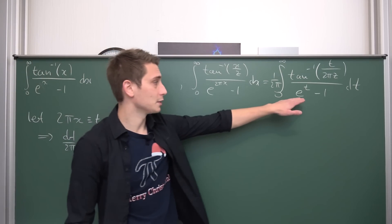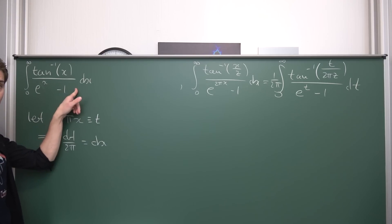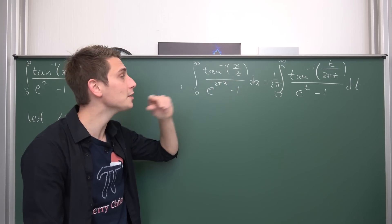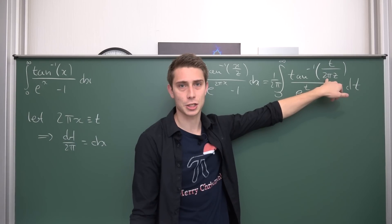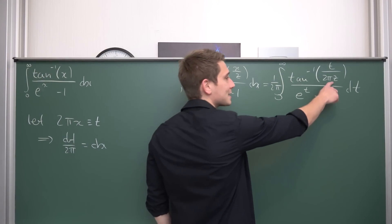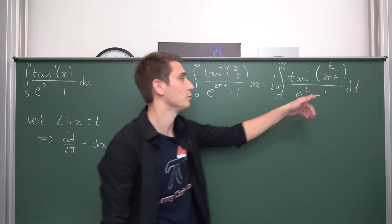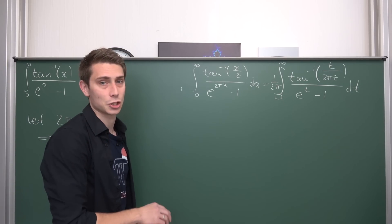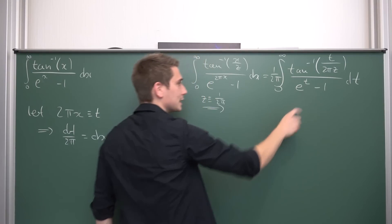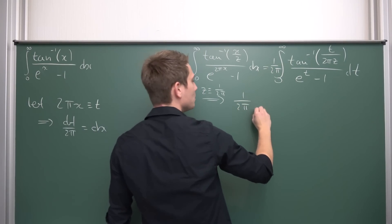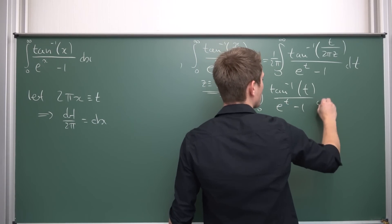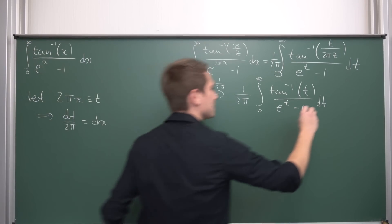This thing is actually really similar to what we have, with the only difference being that we have a factor of 1 over 2π in front — we can get rid of it later by multiplying both sides by 2π. Also, we have this inverse tangent argument t over 2π·z. How do we get from t over 2π·z to just t? By setting z equal to 1 over 2π, the multiplicative inverse. Because t over 2π divided by 2π turns into t over 1 = t. So for z equal to 1 over 2π, this integral turns into 1 over 2π times the integral from 0 to infinity of arctan(t) over (e^t − 1) dt — and that is exactly 1 over 2π times the integral we are seeking.